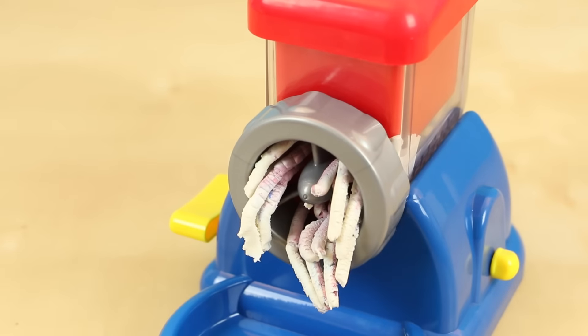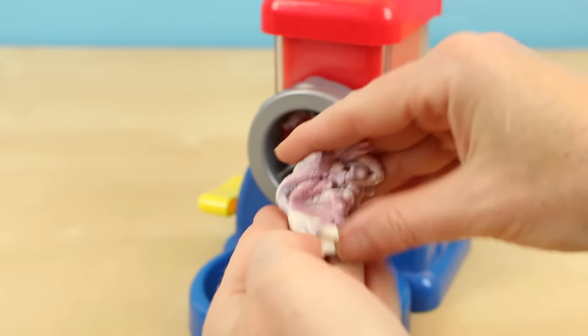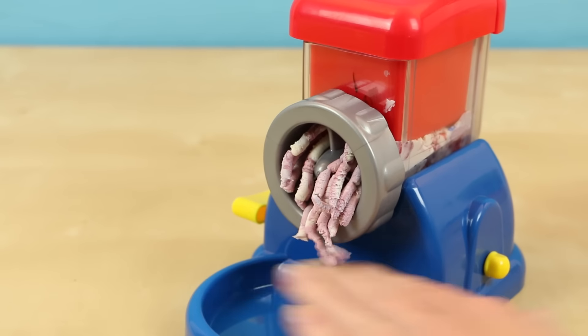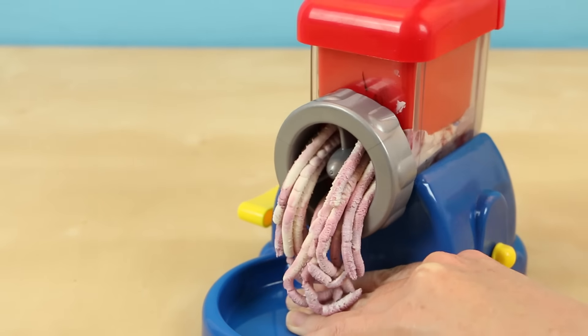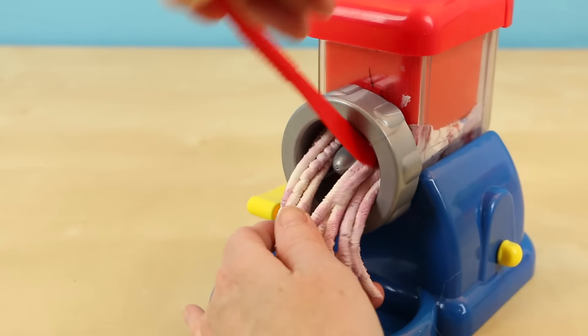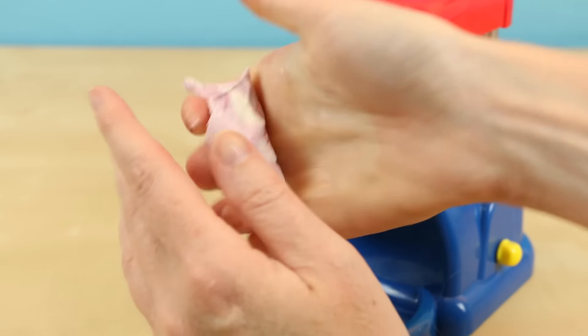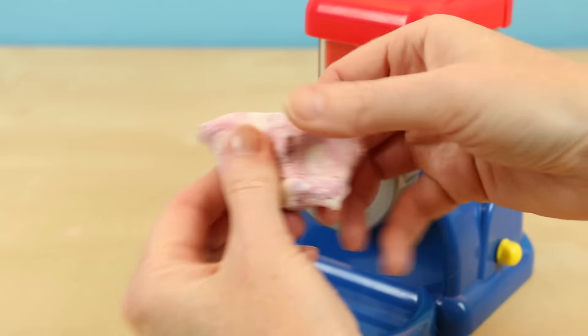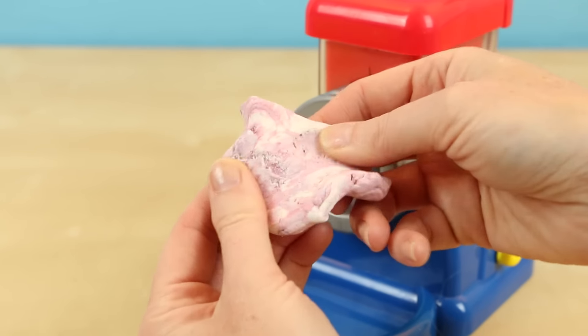Hmm, you can kind of see that the dough is changing color. This is just the first run through. Let's put it in the machine again to get a deeper color. Hey, this is a lot better this time around. Ooh, I really kind of like that marble effect. That's really pretty.